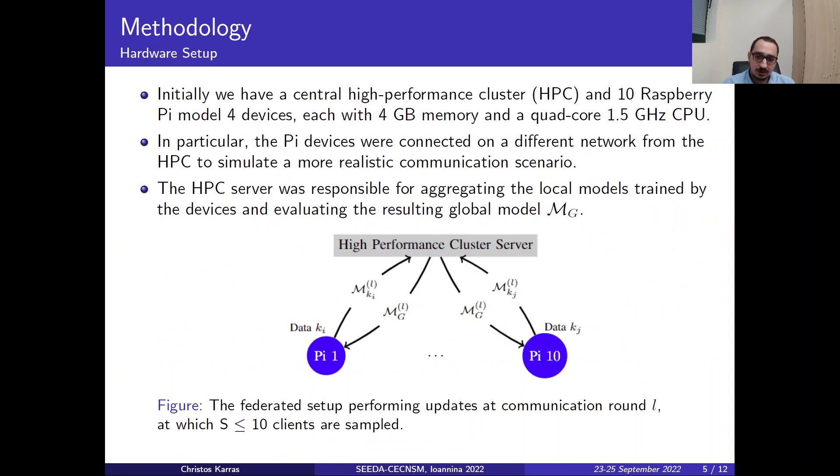Starting with the engineering part of this work, initially we have a central high-performance cluster server and 10 Raspberry Pi devices of model 4. Each has 4GB of memory and a quad-core 1.5GHz CPU.